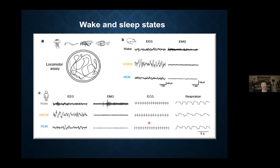Sleep is not just about changing the conscious state of the brain. It's also about the reduction of both the somatic motor activity and the autonomic motor activity. My lab is interested in the neural mechanisms controlling sleep, and what I hope to convince you today is that a lot of the neurons controlling sleep are really part of the motor circuits controlling these two types of movement.